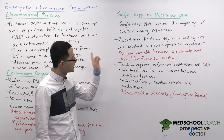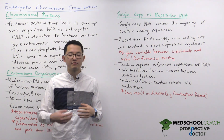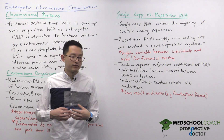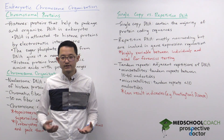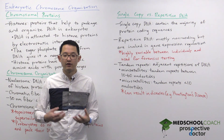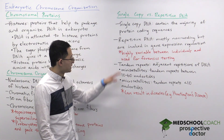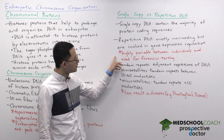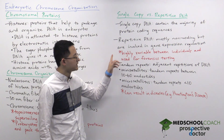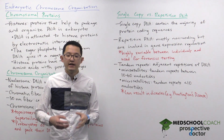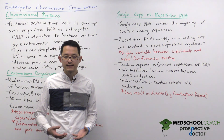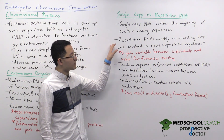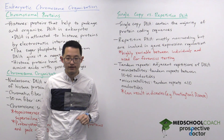However, since they are non-coding, it is possible for mutations to accumulate in these areas without producing deleterious effects on the organism. Because of this, there is a lot of variability in these non-coding repetitive DNA regions between individuals, and that's why forensics testing often looks at the differences in repetitive DNA between individuals.